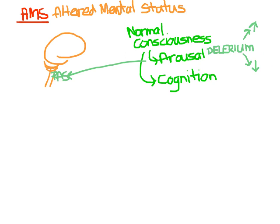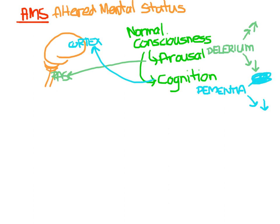Cognition, on the other hand, is a function of properly working cortical hemispheres — the cortex. This is basically our ability to think. Derangements in cognition is what we see with dementia. Depressed cognition could be anything from not being as sharp as normal, to confusion, amnesia, hallucinations, or detachment from reality. There's really no such thing as revved up cognition, because nobody's going to complain that they're smarter than usual.